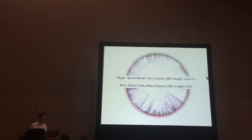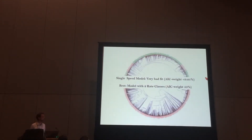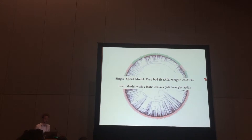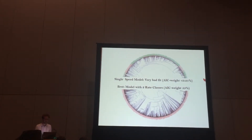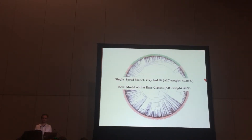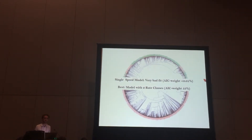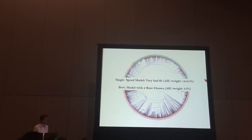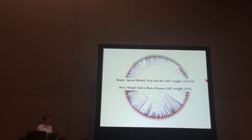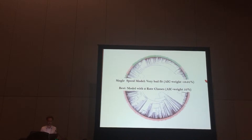When we apply these methods to our data, we find that a single-speed model provides a very poor fit, and that confirms there were multiple speeds of evolution in the history of this symbiosis. But we also find, importantly, that by far our best models are those with two rate classes.